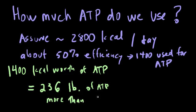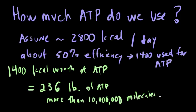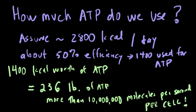Now at first, this should not seem reasonable — there must be a miscalculation, right? You should be saying things like, in order to make 236 pounds of ATP, you'd need to eat 500 pounds of food, and in truth you'd have to actually eat a lot more than that. But no, there's nothing grossly wrong with this calculation.